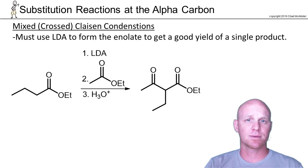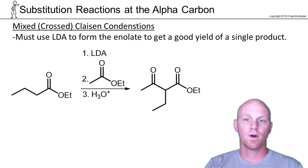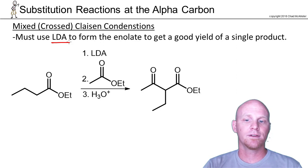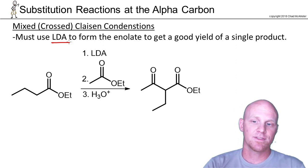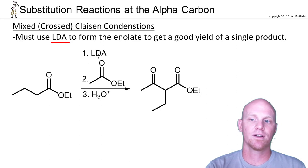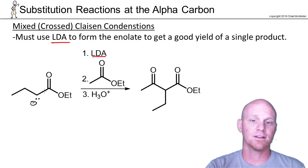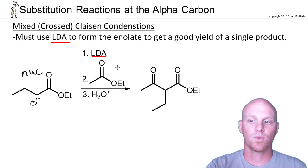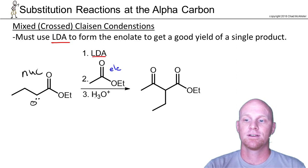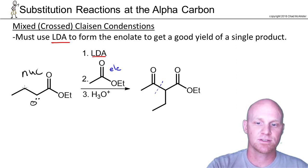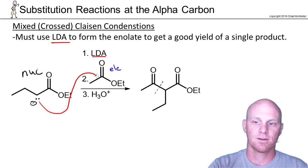Now let's take a look at mixed Claisen condensations, sometimes called crossed Claisen condensations. This is very similar to what we saw with aldols — if you want a good yield of a single product you have to do it carefully. The only real option is to use LDA. LDA won't do nucleophilic acyl substitution because it's a big bulky base, and it lets you choose which ester forms the enolate. In the example shown, we add LDA only to the first ester, so only that ester gets deprotonated at the alpha carbon and forms the enolate — it automatically becomes our nucleophile. The ester added in step two therefore has to be the electrophile.